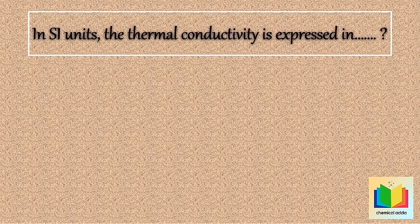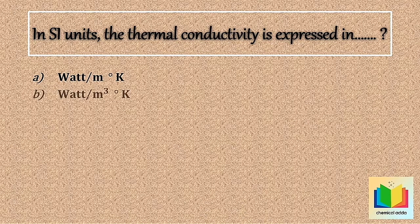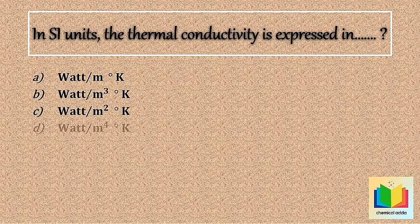Next question: In SI units, the thermal conductivity is expressed in. Option A: Watt per meter degree Kelvin. Option B: Watt per meter cube degree Kelvin. Option C: Watt per meter square degree Kelvin. Option D: Watt per meter raised to power 4 degree Kelvin.